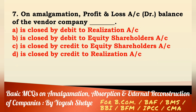Question 7: On amalgamation, Profit and Loss account debit balance of the vendor company — is closed by debit to Realization account, debit to Equity Shareholders account, credit to Realization account, or credit to Realization account? Answer: It is closed by debit to Equity Shareholders account. Answer B.